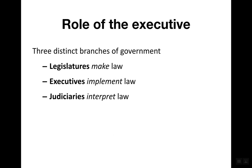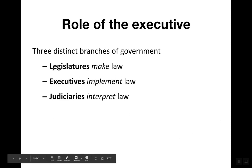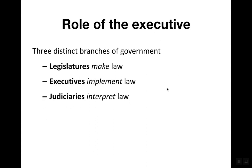In thinking about the role of the executive, we can utilize an understanding of the three branches of government. Government systems around the world may not have the same exact system as the United States, but political scientists find that different states or countries will have some government body composed of a legislature, an executive, and a judiciary. They may have different titles such as assembly or cabinet, but we can see them take a variety of responsibilities.